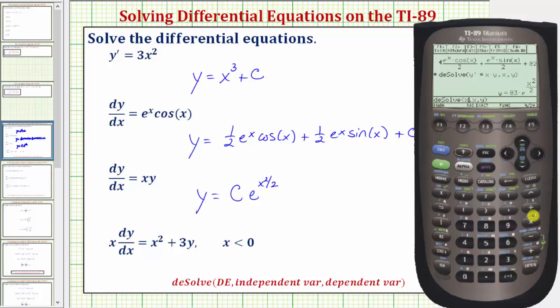Now we'll enter x times dy dx is y prime, so y second equals sign equals x squared, x raised to the power of two, plus three y. We already have the comma x comma y, close parenthesis, so we press enter.